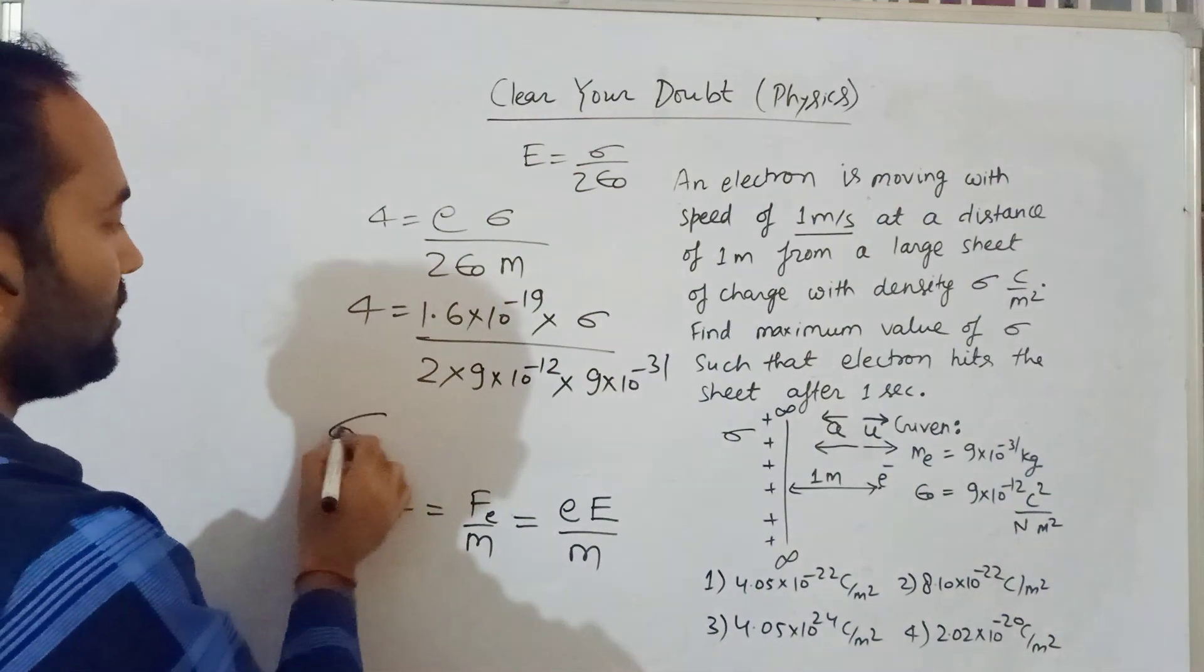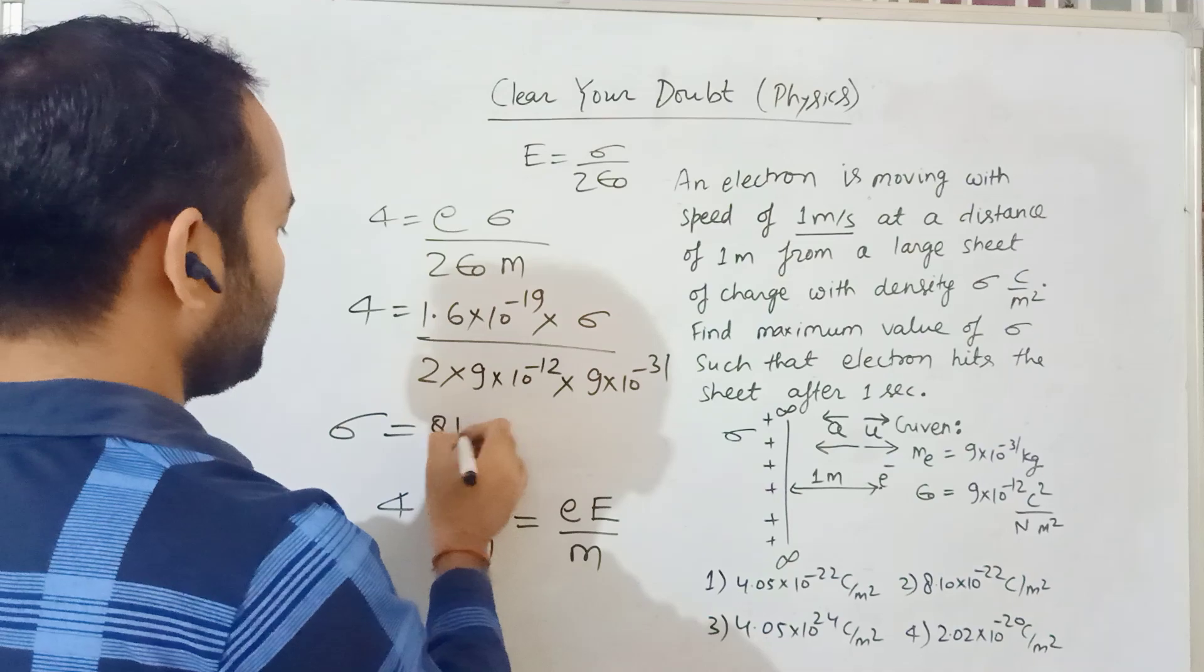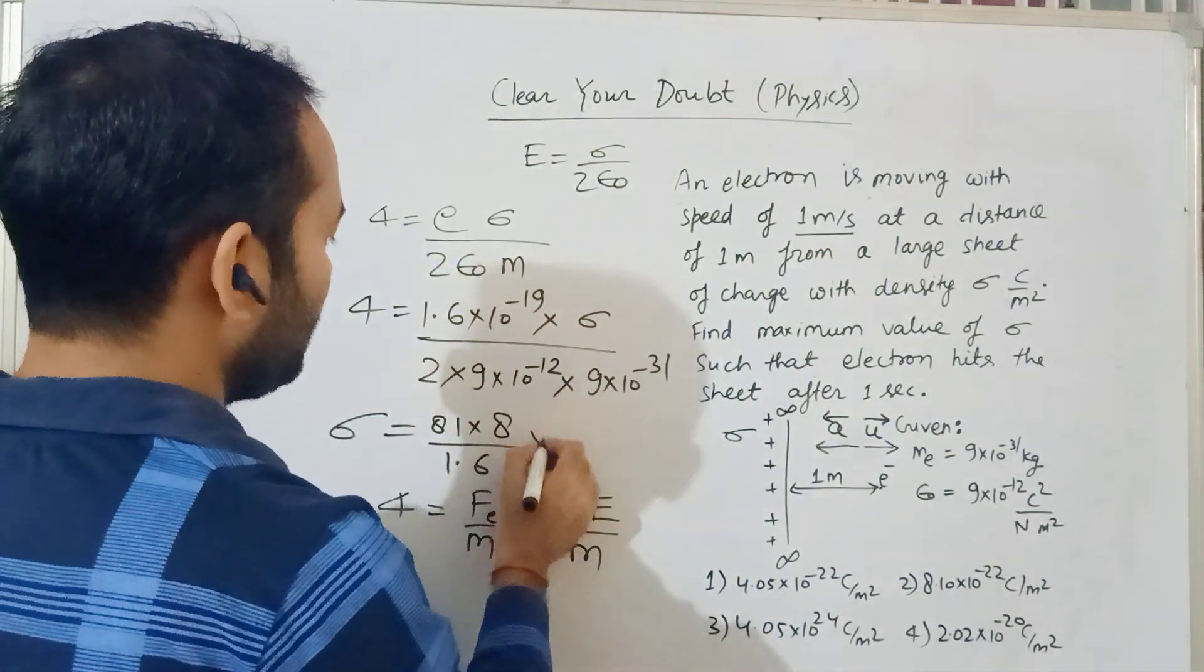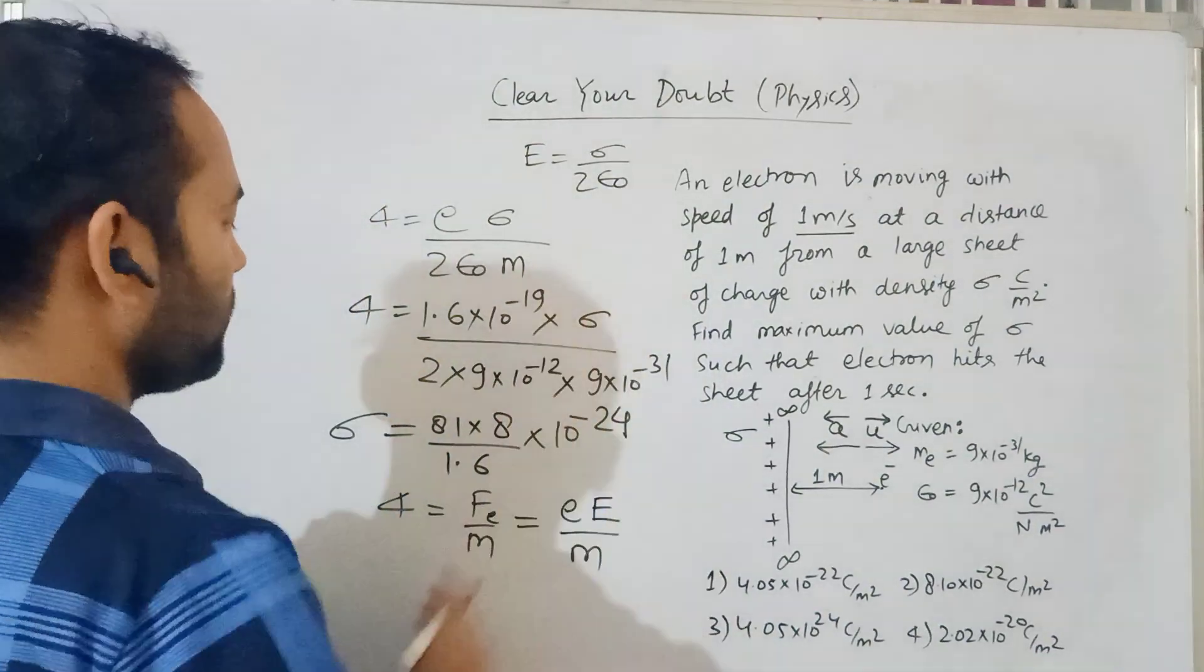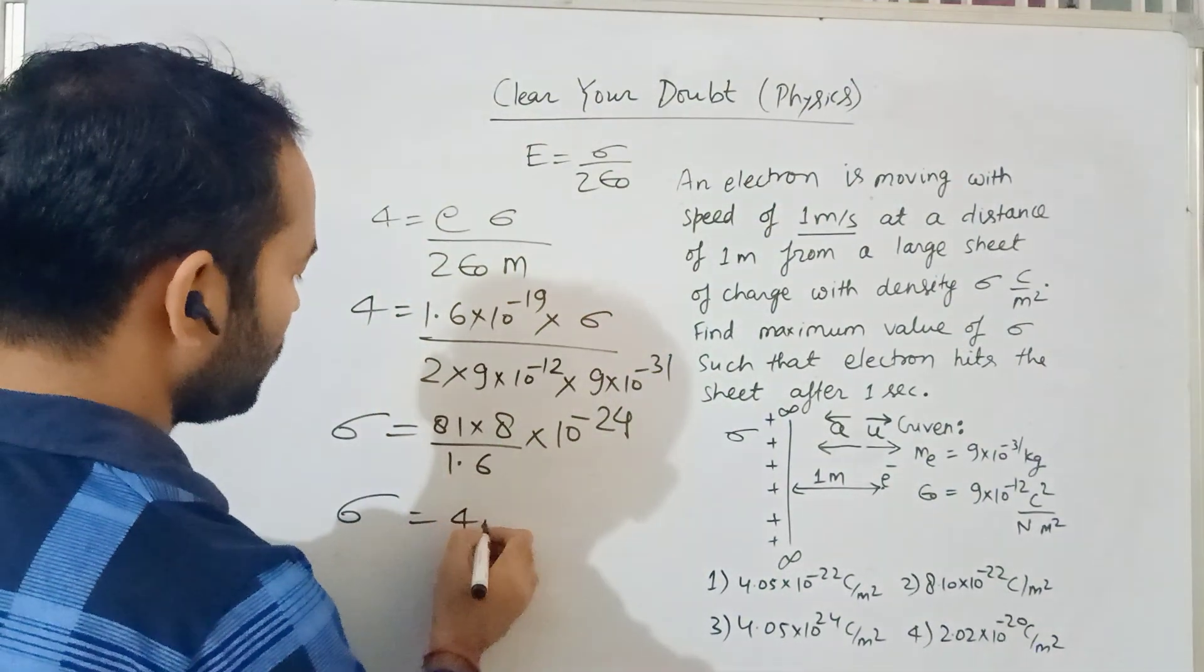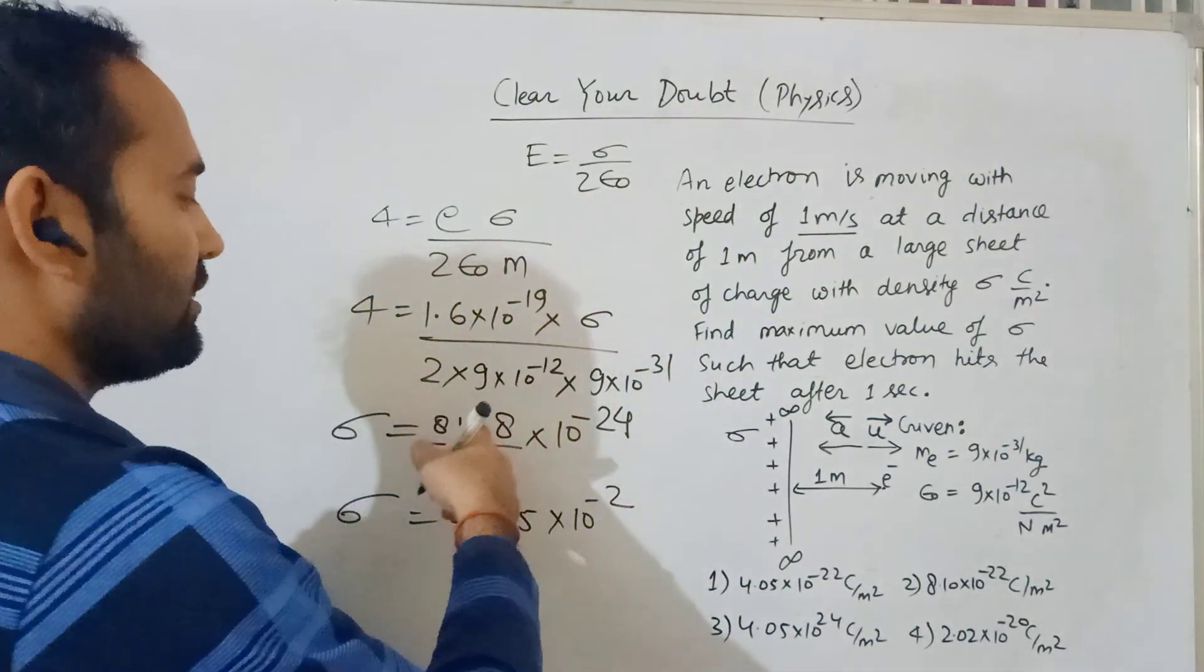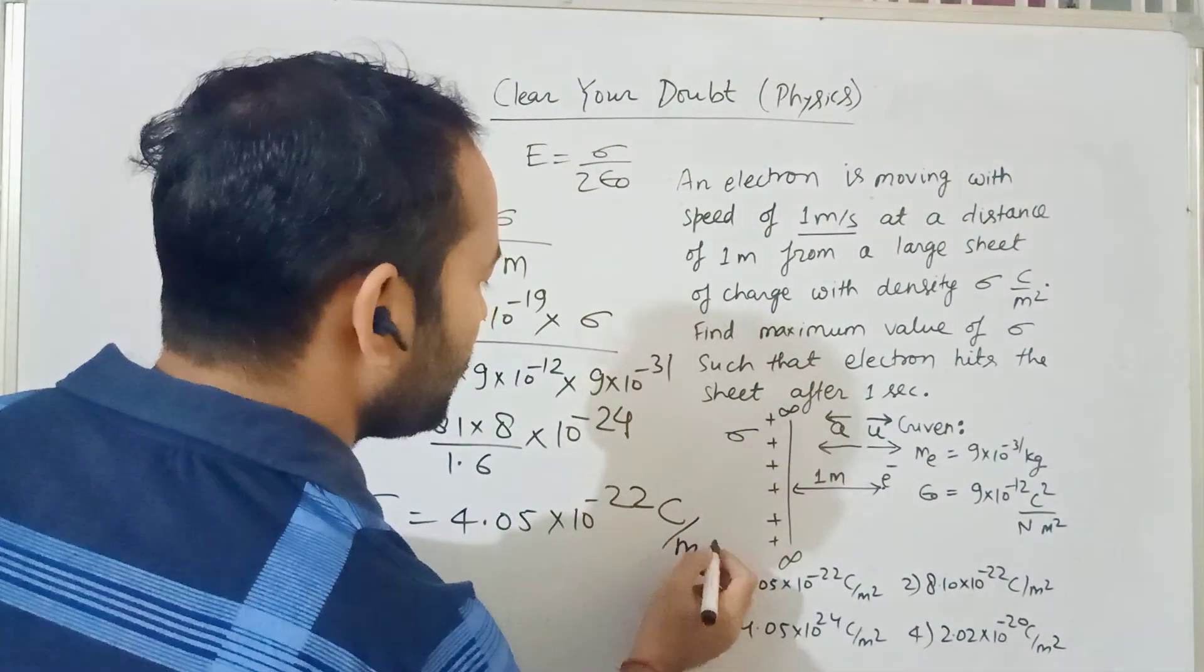So from here, sigma's value will be: 2 × 9 × 9 × 4 = 81 × 8 upon 1.6, times 10⁻²⁴. When you solve this, you get 4.05 × 10⁻²², which is basically 405 coulomb per meter squared.